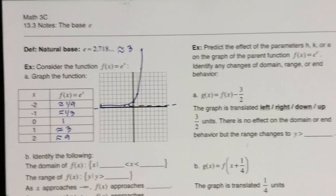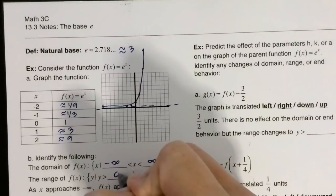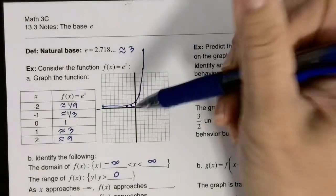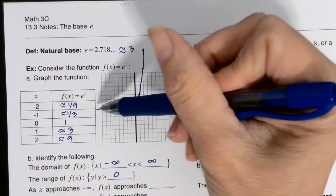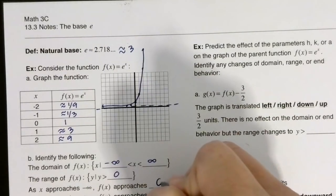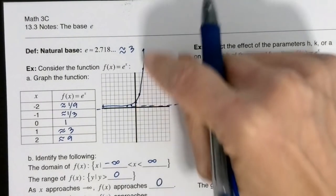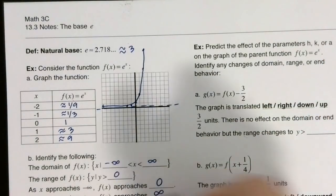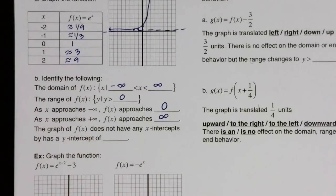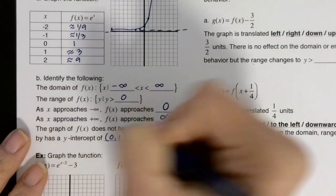So let's go ahead and identify the domain. It's from negative infinity to infinity, and without any shifting or anything, it's going to be greater than 0. So as x approaches negative infinity, the y values are approaching 0. As your x's are getting bigger and bigger, your y values are going closer to infinity because they keep growing. The graph of f(x) does not have any x-intercepts because it doesn't cross the x-axis, but it does have a y-intercept of (0,1).